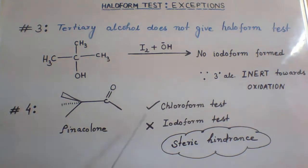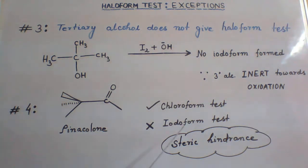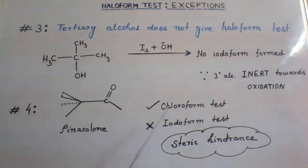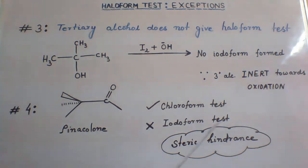The reason for showing a negative haloform test can be explained on the basis of steric hindrance. In the reaction, when the bulkier iodine approaches this bulkier group, it suffers steric hindrance, resulting in no formation of haloform.